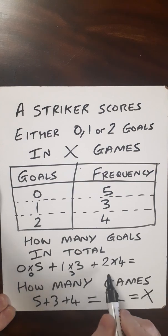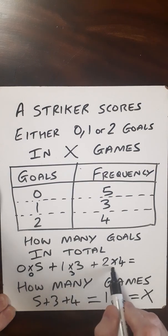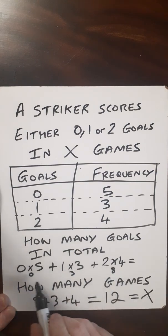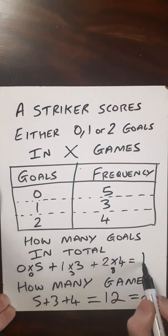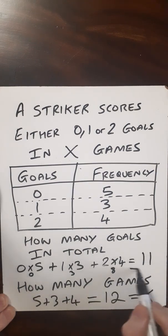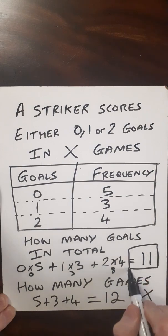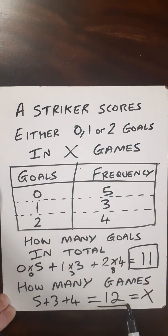Put that in our calculator: 1 times 3 is 3, 2 times 4 is 8, so 0 plus 3 plus 8 gives us 11. And that is us done.